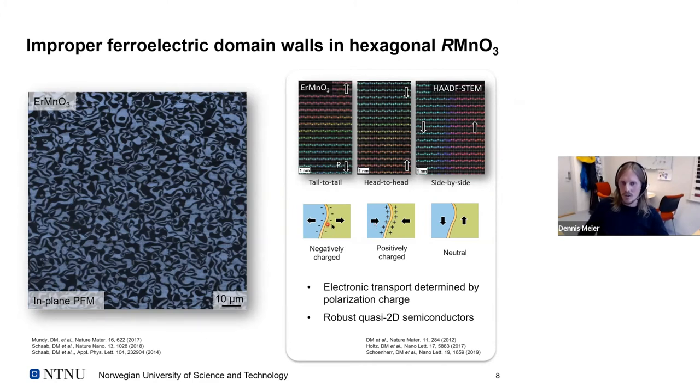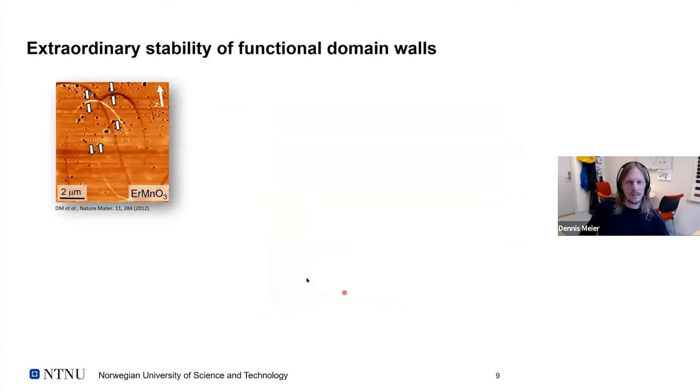What's already established is the electronic transport behavior is determined by the polarization state. You can have accumulation or depletion of hole carriers, enhanced and reduced conductivity. And because of this, we can consider these interfaces really as robust quasi-2D semiconductors. What we already showed in 2012 then is the conduction properties of these domain walls. You see here the conductive atomic force microscopy map. Head-to-head domain walls, that's where we have the positive charges. Our holes in this p-type system move away. We have reduced conductivity. And the tail-to-tail domain walls, holes accumulate to screen the negative bound charges, giving us enhanced conductivity. And when we walk along such a domain wall, you see that it gradually increases conductivity until we hit these neutral points where we have bipolar behavior.